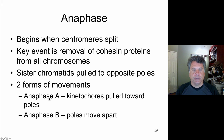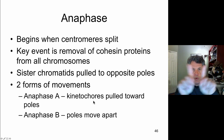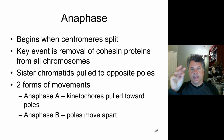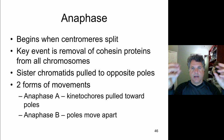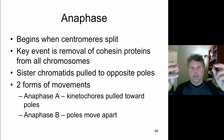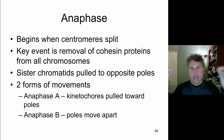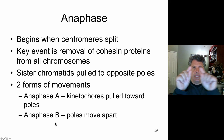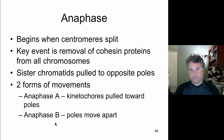The sister chromatids are pulled to opposite poles. Anaphase is broken into two stages — anaphase A and anaphase B. In anaphase A, the kinetochores are pulled toward opposite poles by depolymerization and reattachment of microtubules at the kinetochore, shortening the microtubules and dragging the chromosomes apart. In anaphase B, the poles of the cell are actually moved apart. That is where this lecture will continue in the next part.